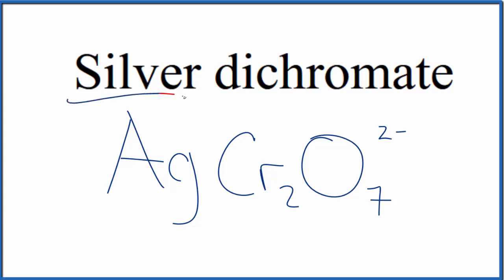So we have silver, which is a transition metal, then we have this polyatomic ion. We need to think about the charge. Silver dichromate, the whole thing, is neutral. It doesn't say ion after it, so the charges need to add up to zero.